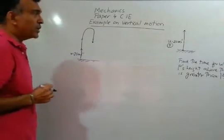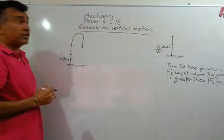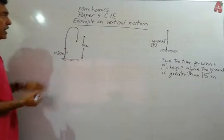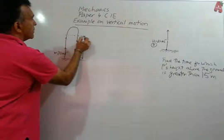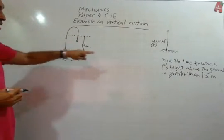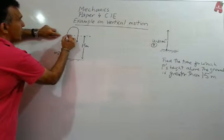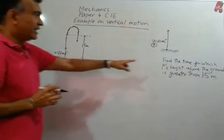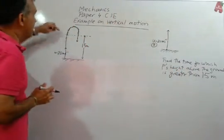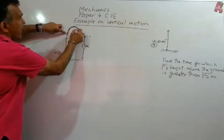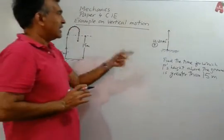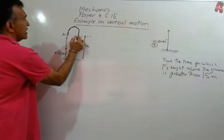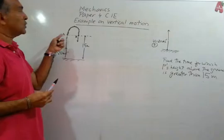They are asking us to find the time for which P's height above the ground is greater than 15 meters. So we mark 15 meters on the diagram. P's height is greater than 15 meters from point A going up through to point B on the way down. We want to know how much time it takes to travel from A to B.